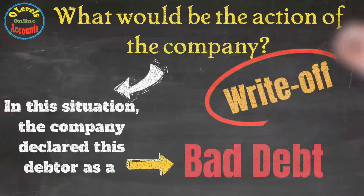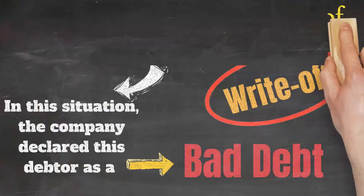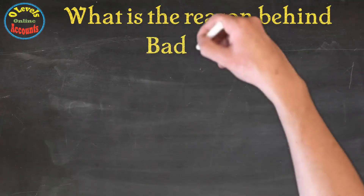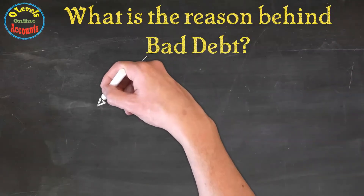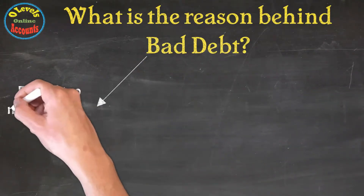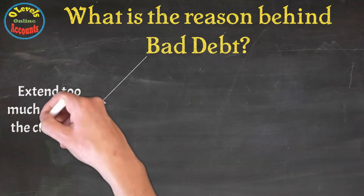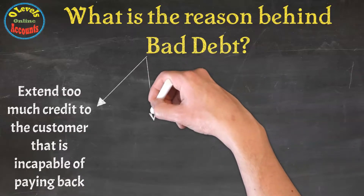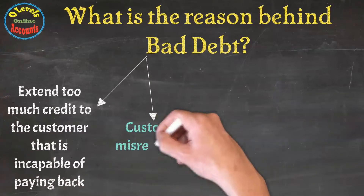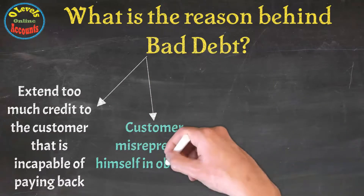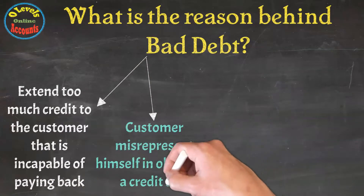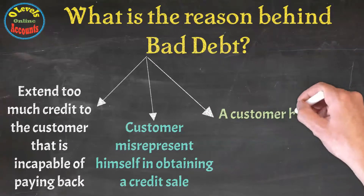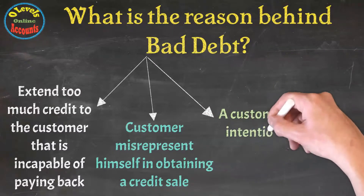What is the reason behind bad debt? The first reason is that the company extended too much credit to a customer who is incapable of paying back. Secondly, the customer misrepresents himself in obtaining a credit sale. The third reason is that the customer has no intention to pay the debt.